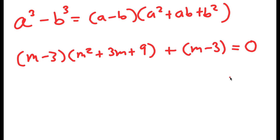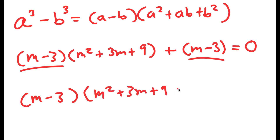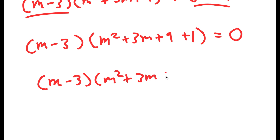Now from here, notice how I have two terms with m minus 3 in them. So the best thing I can do here is factor out m minus 3. I get m minus 3 times m squared plus 3m plus 9 plus 1 is equal to 0, and this turns into m minus 3 times m squared plus 3m plus 10 is equal to 0.